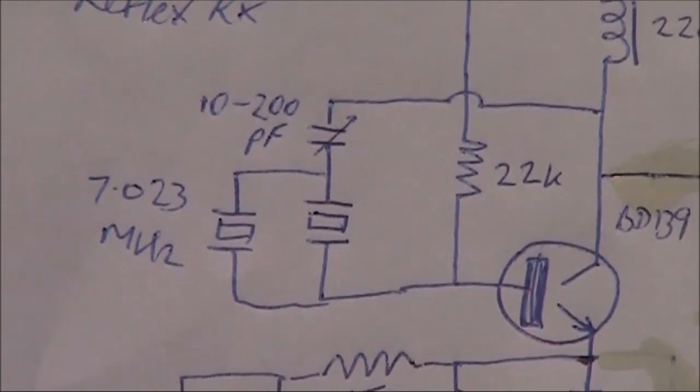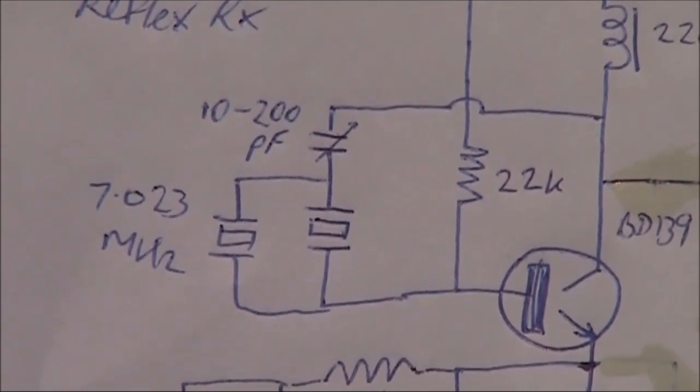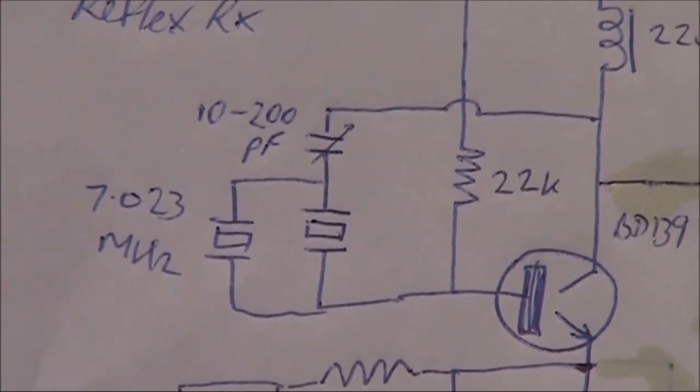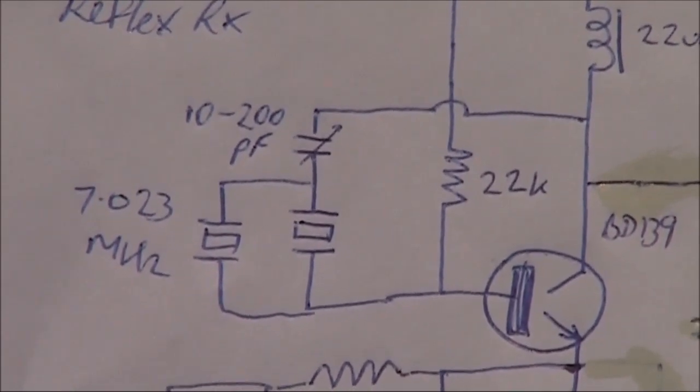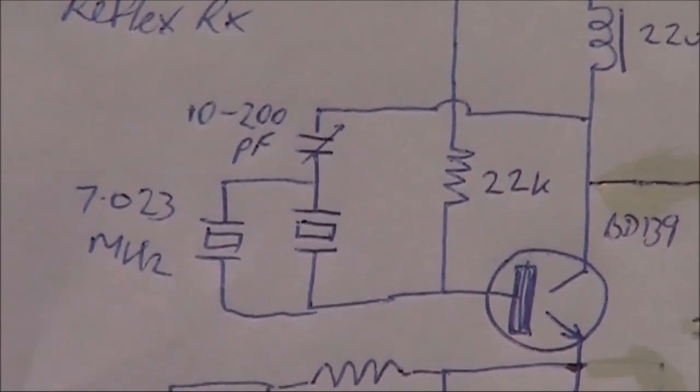And the variable capacitor in series, strictly speaking, that is also optional. But you do want to shift the frequency a little bit when you go from transmit to receive. If you don't have a variable capacitor, then you could put in a fixed capacitor of, say, 220 picofarad.